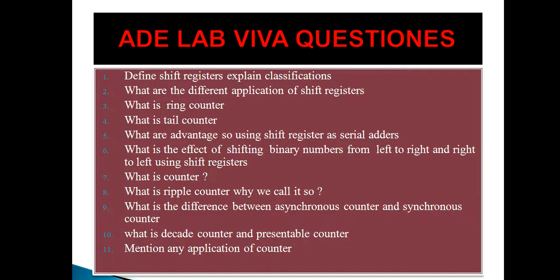Define shift registers and explain classifications. Shift registers are a group of latches. The job of the shift register is to shift bits either from left to right or right to left, and to store a group of bits. If you have 8 bits and use 8 flip-flops, it will store 1 byte. So a shift register is a group of flip-flops, and one flip-flop can store 1 bit.